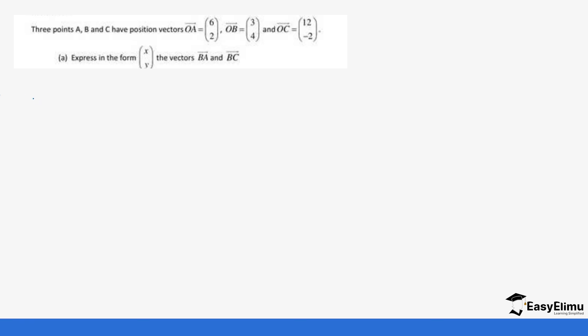So we have OA, we have OB, and we have OC. So OA, let's say this is the origin, we have A up here. And then this is still the origin, we have B up here. So you are being told to look for this vector.